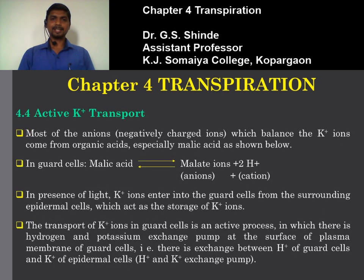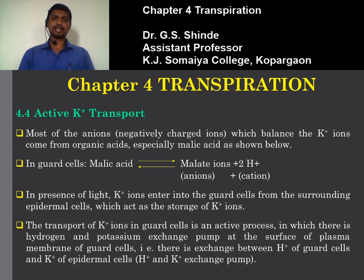Most of the anions — these are the negatively charged ions — which balance the K+ ions, come from organic acid, especially malic acid. In the guard cell, malic acid dissociates into malate ions, which are negatively charged anions, and two H+ ions, which are positively charged cations.